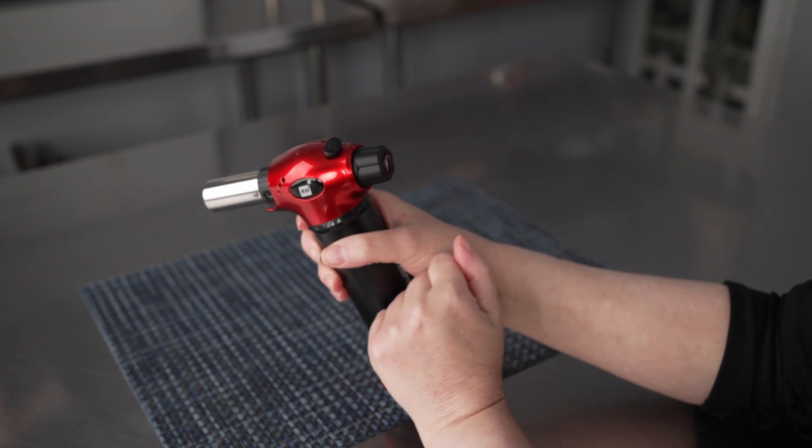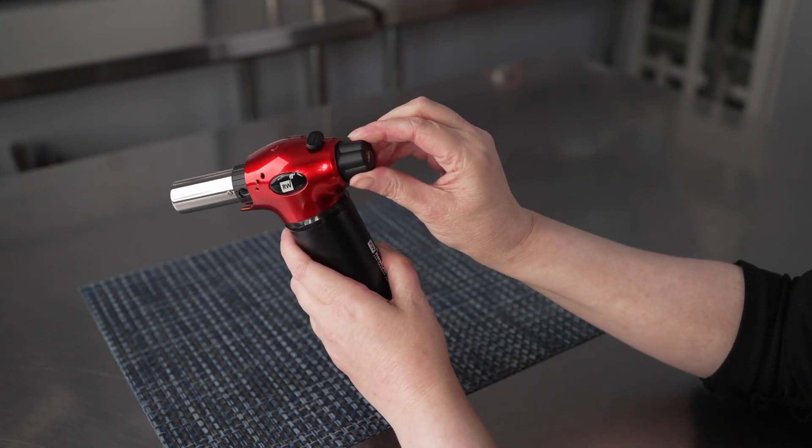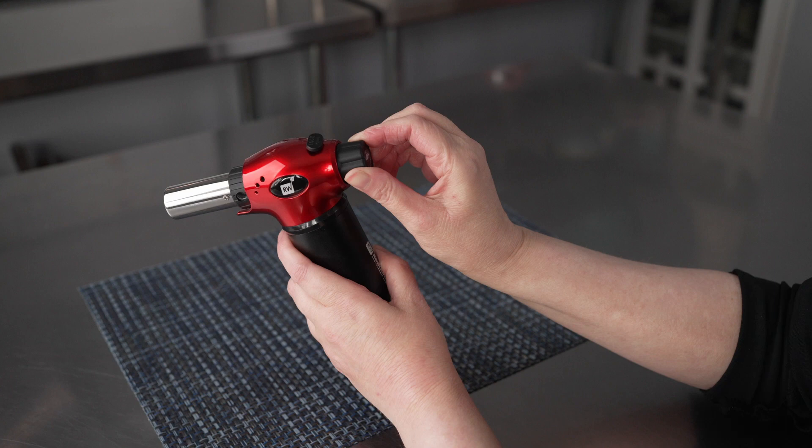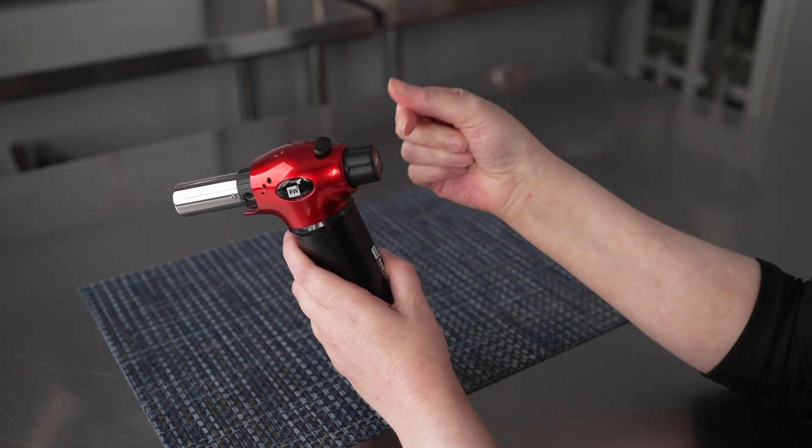When you release, that lock will stay there, and you can use the regulator knob then to adjust the level of your flame. So you want to get it going first and then adjust.